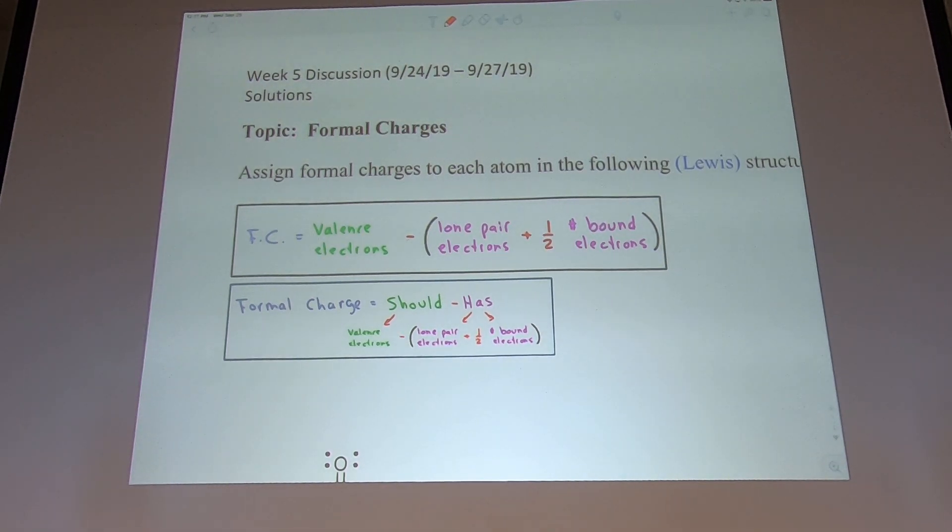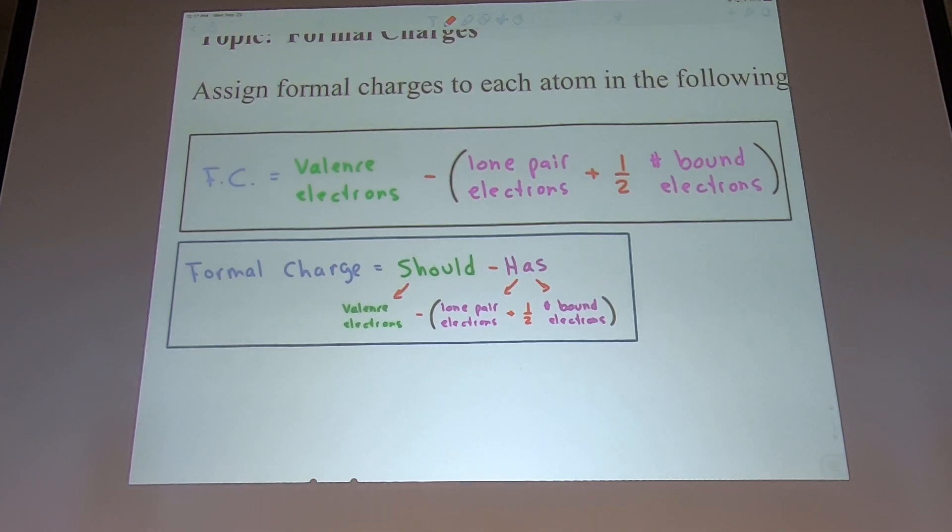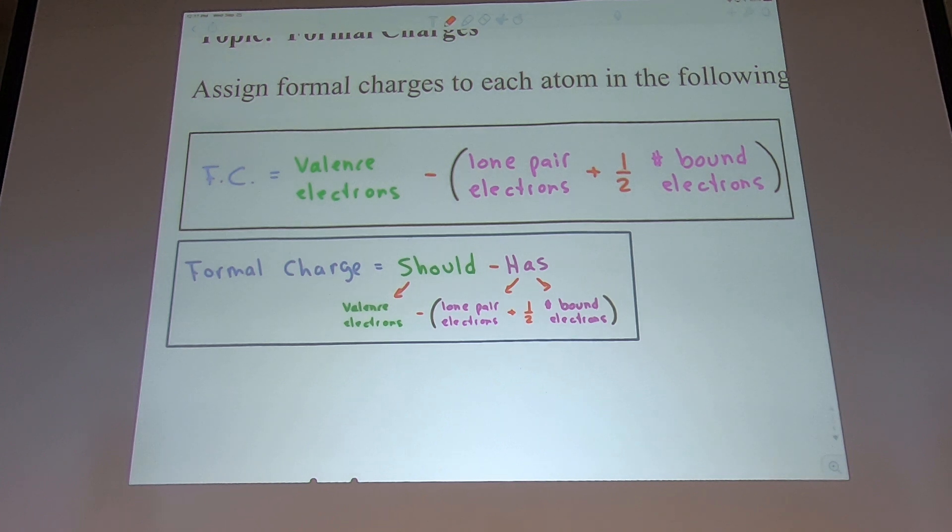Okay, so the first question is about formal charges. This question gives you the resonance structures or Lewis structures, and then you need to assign the formal charges. Do you remember the formal charge equation? I found this handwriting online that I like. The formal charge is the number of valence electrons minus the number of lone pair electrons plus bond electrons multiplied by half.